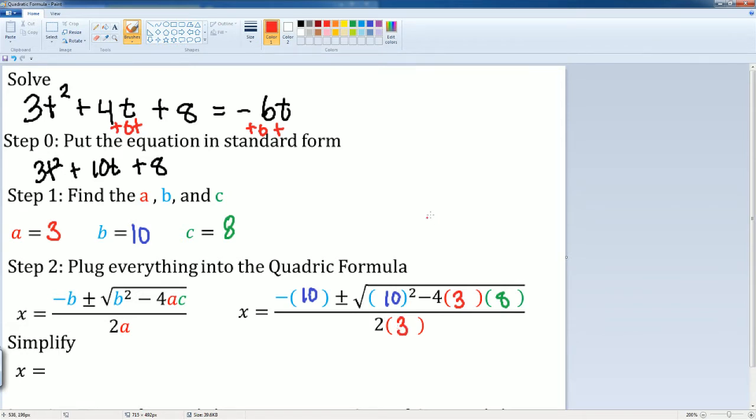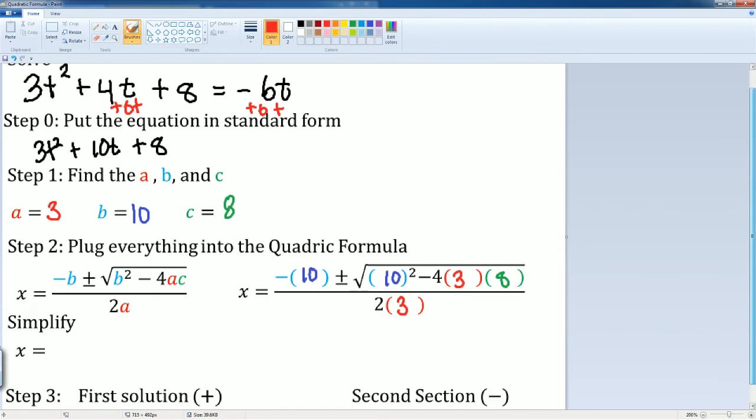Now, to simplify it, I know that in front, please understand I use x here but for this problem it's t. It's going to be negative 10 plus and minus a radical something. Let's figure out what that radical is.